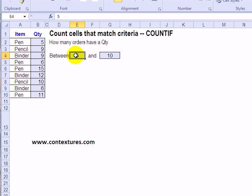You can use the COUNTIF formula in Excel to count things based on criteria. So we could count the number of orders for pens.